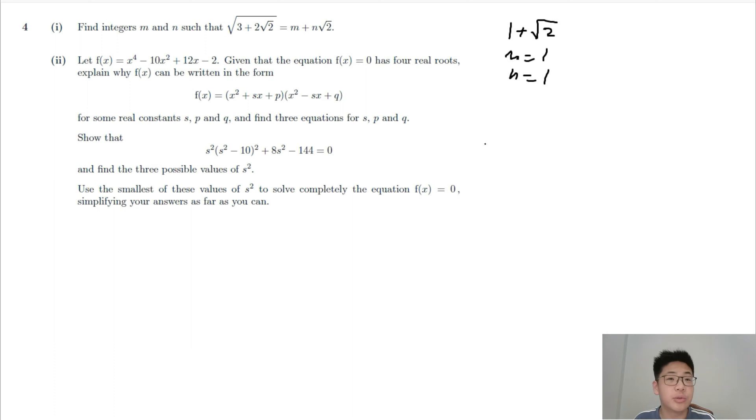Part 2, getting that the equation f(x) = 0 has 4 real roots. So let's see, f(x) could be (x - α)(x - β)(x - γ)(x - δ),